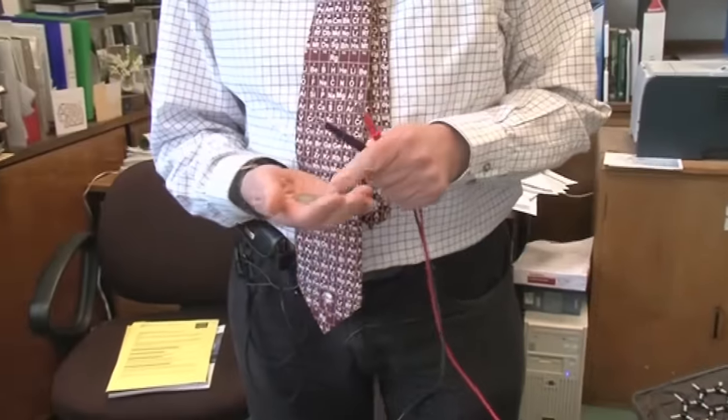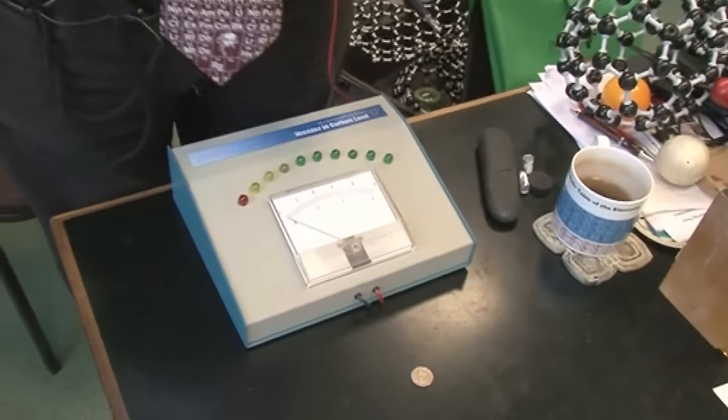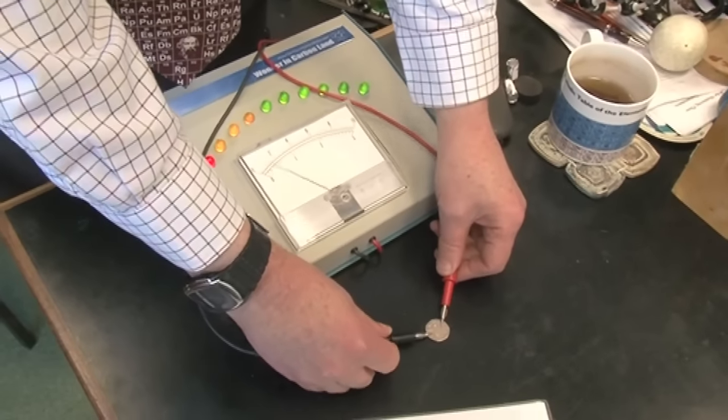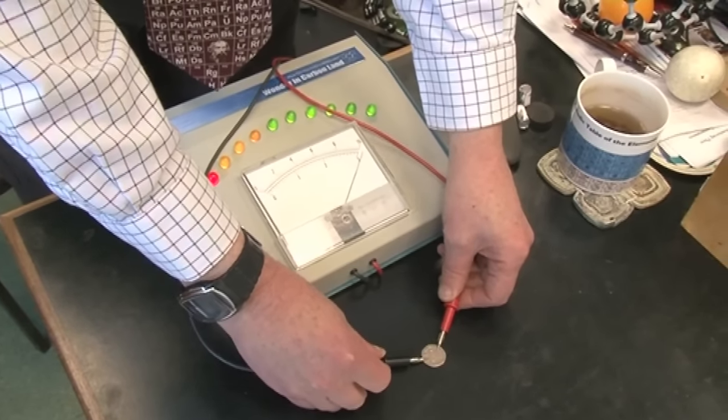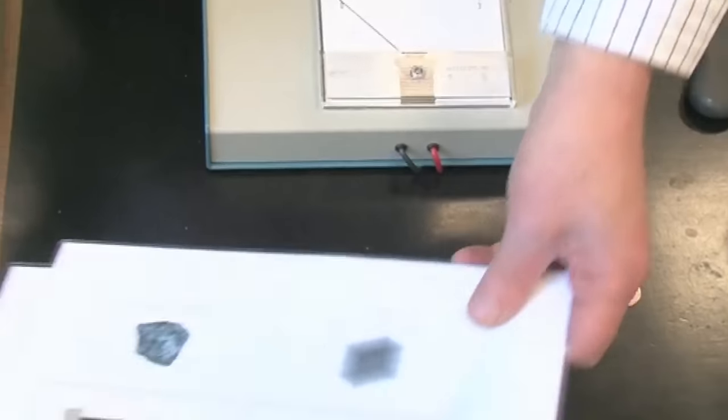This is one of Andre's exhibits. He uses it in exhibitions to measure electrical conductivity. You see, if you take a piece of metal, like this coin, and you put the two electrodes on there, you can see it conducts electricity. All the lights light up and the needle goes across.